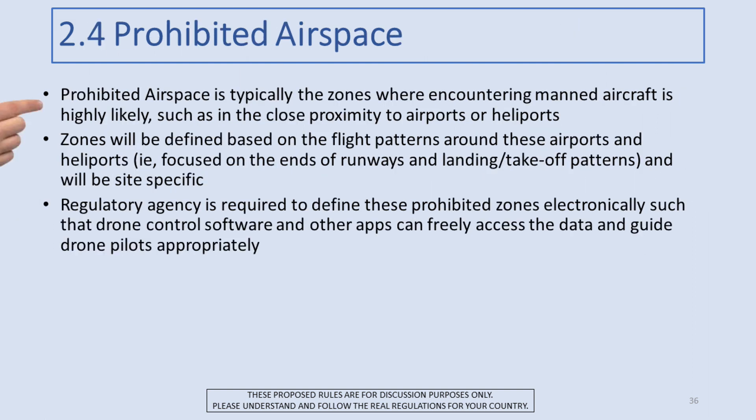Lastly, prohibited airspace — typically the zones where encountering manned aircraft is highly likely, such as in close proximity to airports or heliports. Zones will be defined based on flight patterns around those airports and heliports, focused on the ends of runways and landing/takeoff patterns, and will be site-specific. Think of the DJI fly-safe maps and their bow-tie patterns around runways that define the high-risk areas. The regulatory agency should be required to define these areas electronically so all drone control software and apps can freely access this data and guide drone pilots appropriately.